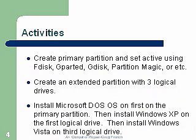Next, we're going to do an activity. I want you to create a primary partition and make sure you set it active. You can use FDisk, which is a good Microsoft utility — I have a video on FDisk. Also, you can use Gparted, a good Linux utility, and I also have a video on this. Or you could use GDisk, a good Norton utility, or PartitionMagic, another Norton utility, or anything else you might have — there are quite a few partition utilities out there. Then I want you to create an extended partition with at least three logical drives. On these logical drives, we can place additional operating systems. Remember to install Microsoft DOS, or your oldest operating system, first, and then in chronological order, the next newer operating systems.